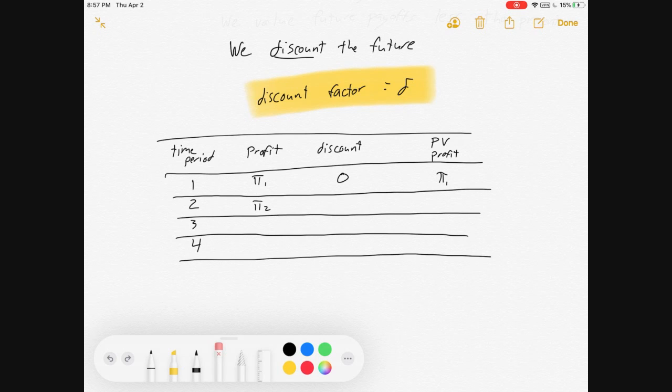In time period 2, profit is π2. It's discounted by δ, which is some number between 0 and 1, by the way. And so the present value of the profit is δπ2.